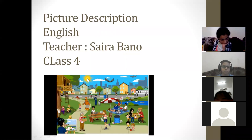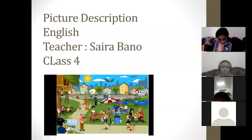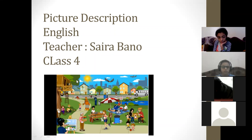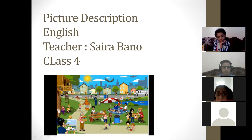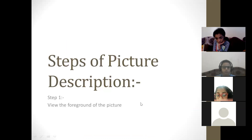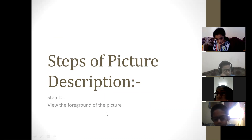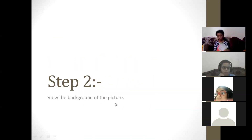Now when we view the background of the picture, you can see there is a sun shining in the bright blue sky, and birds are there in the sky. There is also a plane flying. You can see a road with a bus running on it, and a boy riding a bicycle. There are also houses in the background. All things far from your view are called the background of the picture. So the second step is to view the background of the picture.